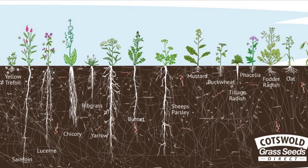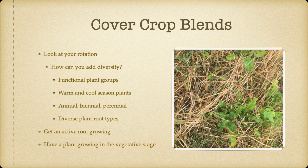Cotswolds Seed has a PDF on their website with really good visualization of how these different roots grow. Sometimes you need a little translator — when you see lucern, that's alfalfa; ribgrass, that's plantain. But most of it is fairly common to us. We want to add this diversity of roots and look at our rotation when getting into these cover crop blends. These functional plant groups — warm season, cool season species, annual, biennial, perennial, diverse plant root types — we want to keep that active root growing in that soil for as many days as we can: 250, 260 days of a green plant. That's what we need in our soils.